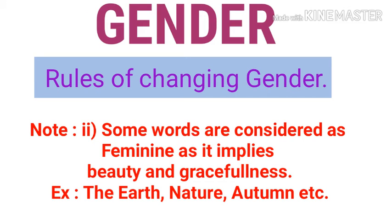Certain words like earth, nature, and autumn are used as feminine gender. For example, we say 'mother nature' — we do not say 'father nature'. Art is also used in feminine gender form. These words denote beauty and gracefulness, so they are used as feminine gender.